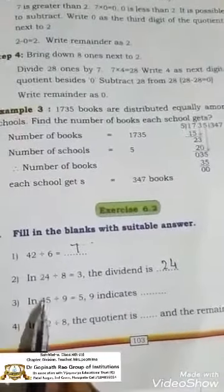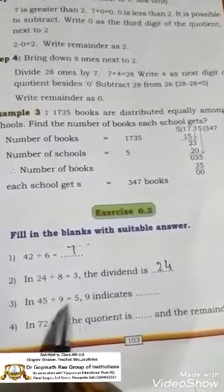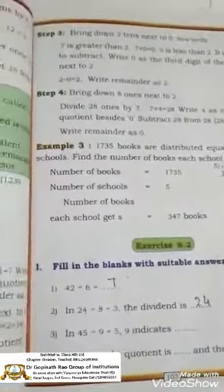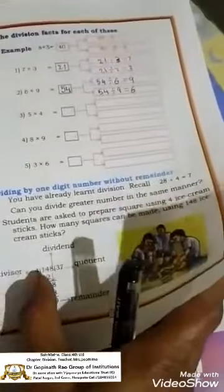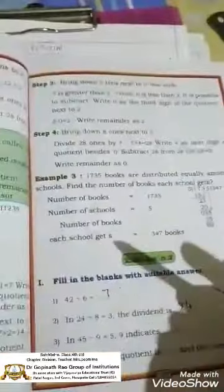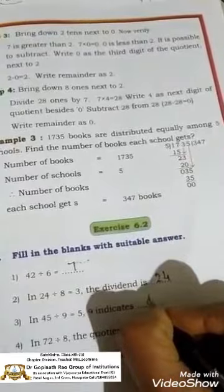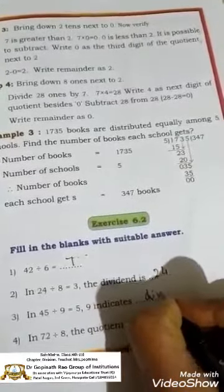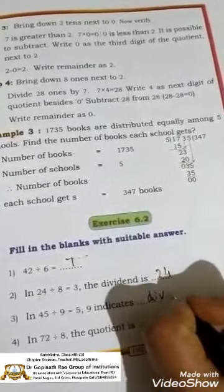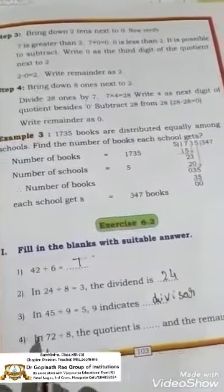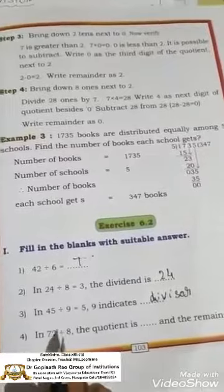Okay children, now we shall continue. Here we have 45 divided by 9 equals 5. This 9 indicates it is a divisor. Children, see here we call it as a divisor. Okay, here 72 divided by 8, the quotient is...